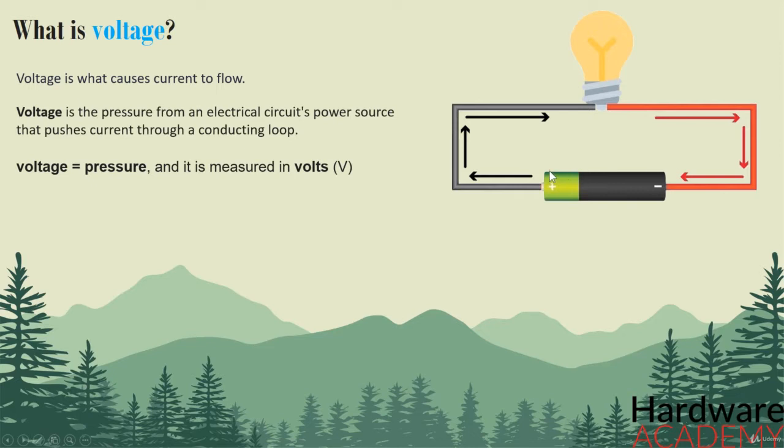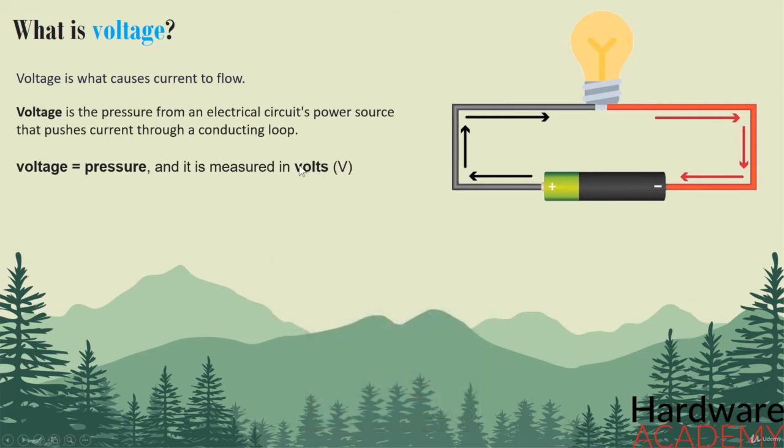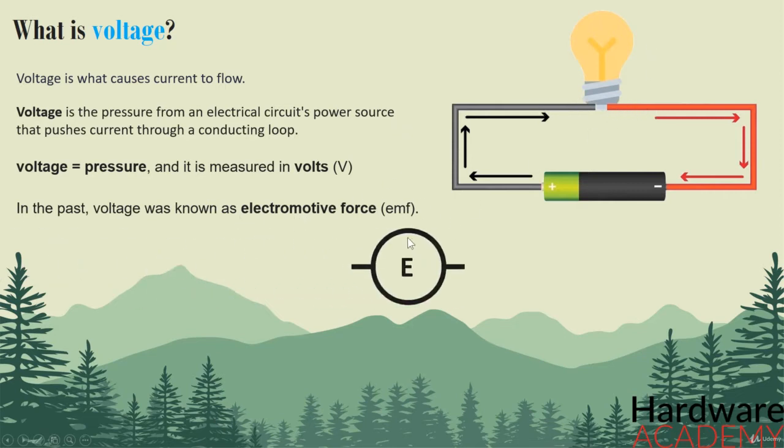If you are curious, the term volts comes from the Italian physicist Alessandro Volta that lived between 1745 and 1827. I don't know if you already knew, but in electricity's early days, voltage was known as electromotive force. This is why in equations such as Ohm's law, voltage is represented by the symbol E. Soon we will talk about Ohm's law too, and you will see that Ohm's law will be one of your best friends in electronics.